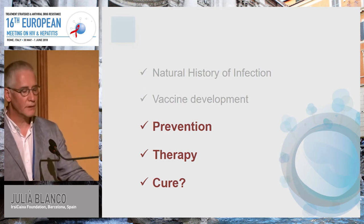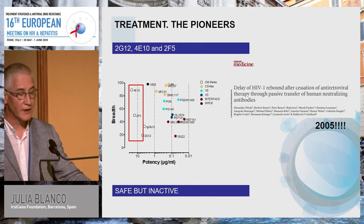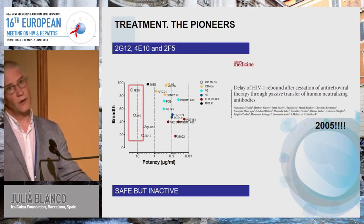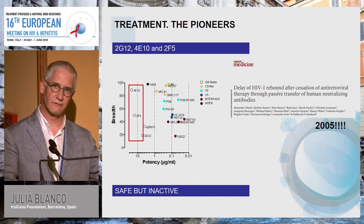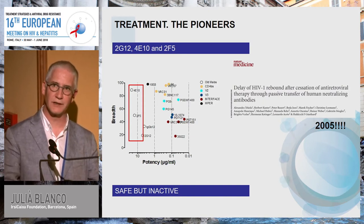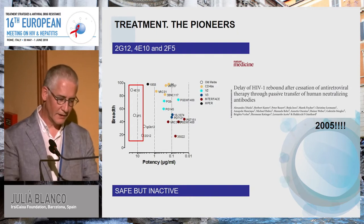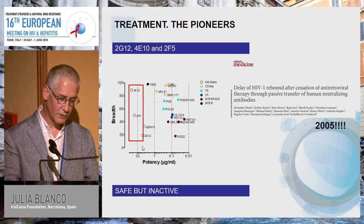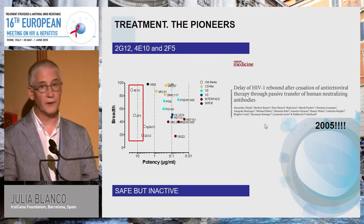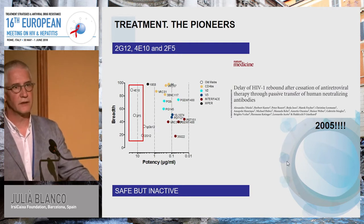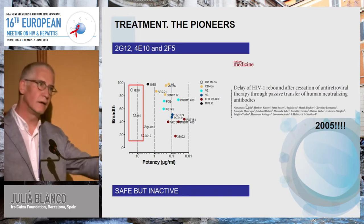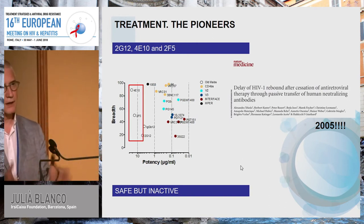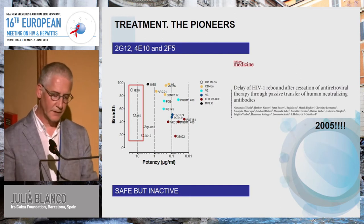Moving to therapy, antibody treatment in HIV-infected individuals started in 2005 with the first low-potency antibodies: 4E10, 2F5, and 2G12. When given to HIV-infected individuals, the effect was very poor—only some delay in viral rebound—but they were safe. That was the good news.